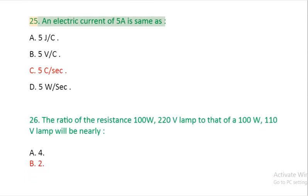Question 25: An electric current of 5A is same as: A: 5JC. B: 5VC. C: 5C per second. D: 5C.